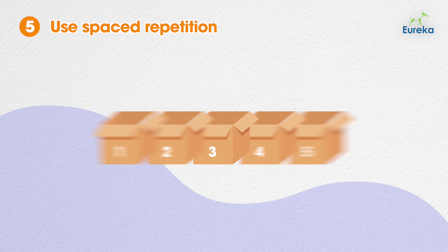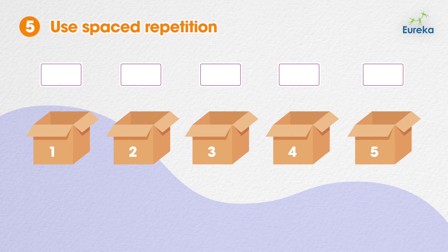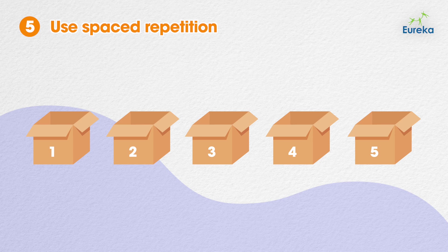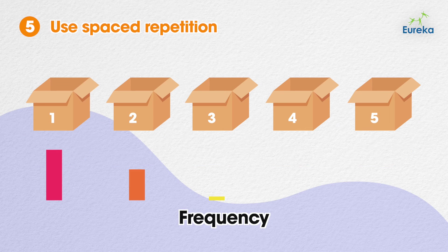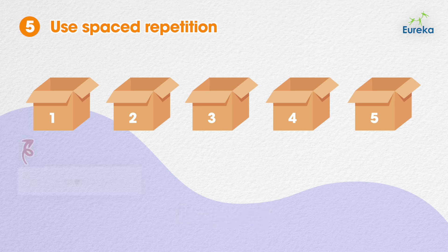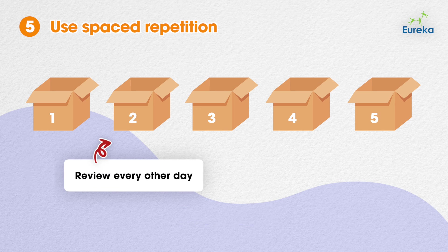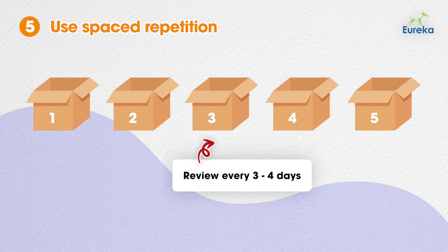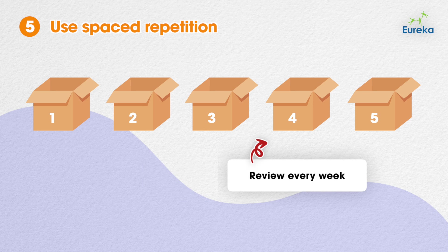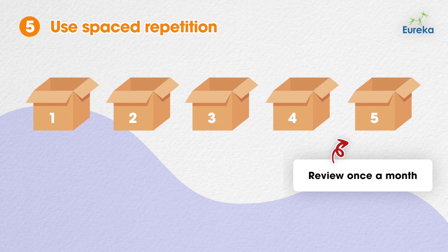First, categorize flashcards according to how often you answer them correctly. When you go through your flashcards, move the ones you get right up to the next numbered stack, while moving the ones you get wrong back down to stack one. Review the lower stacks more frequently and the higher stacks less frequently. For example: stack one, review it every day; stack two, every other day; stack three, every three to four days; stack four, every week; and stack five, every two weeks. And maybe later, just once a month or just keep it in your backup stash.